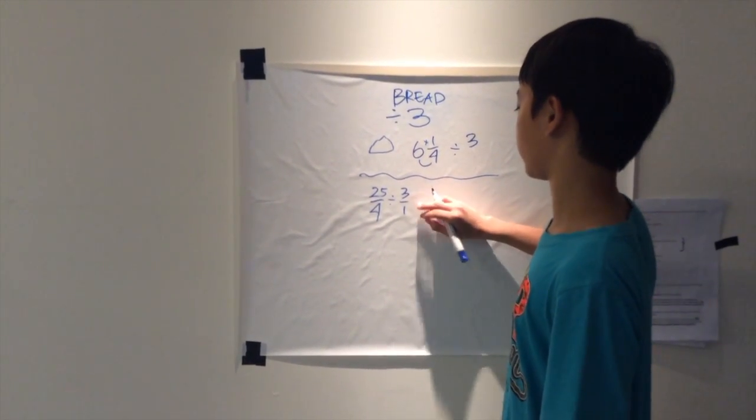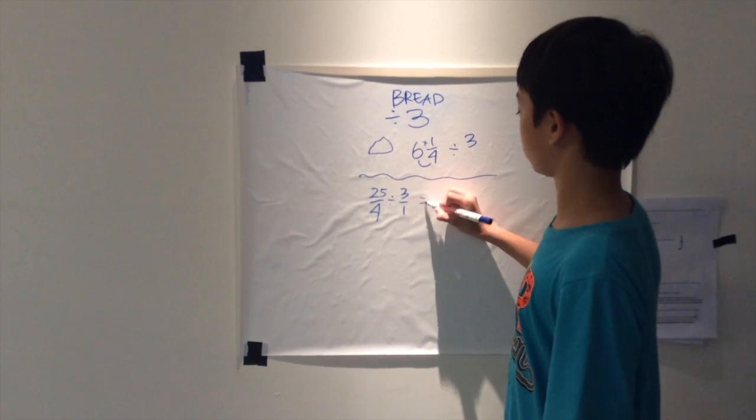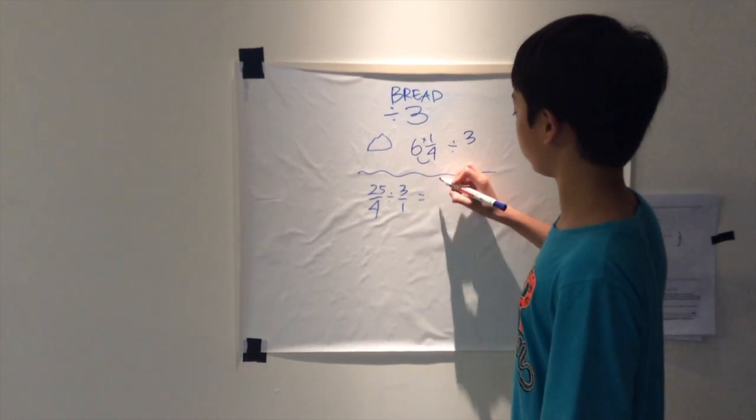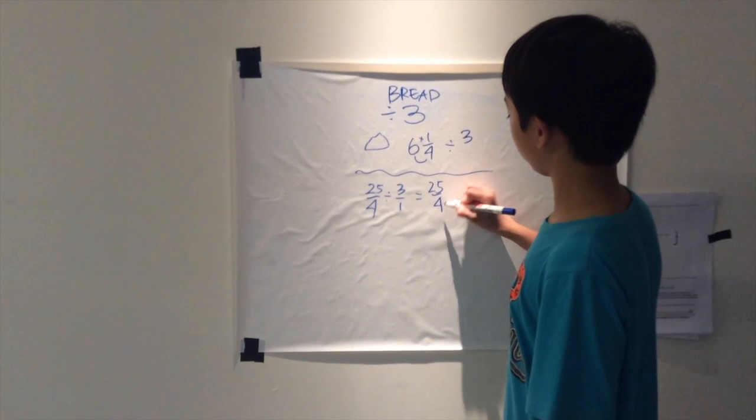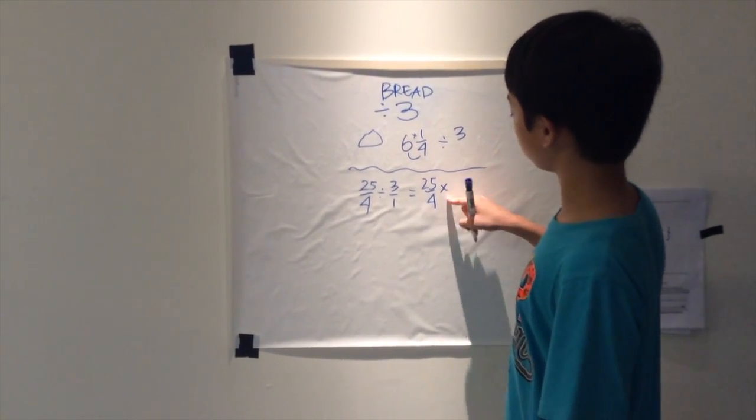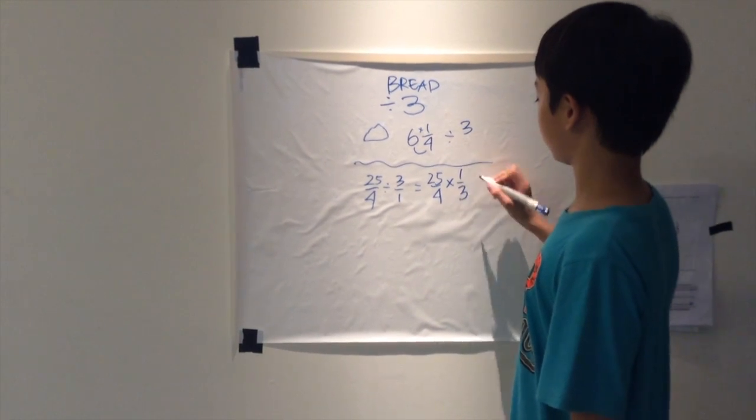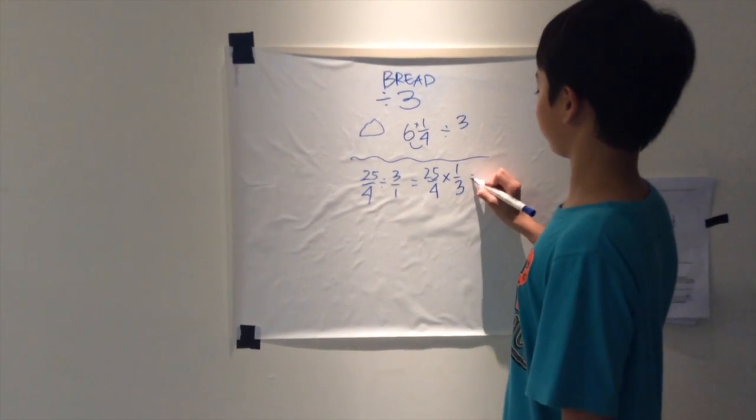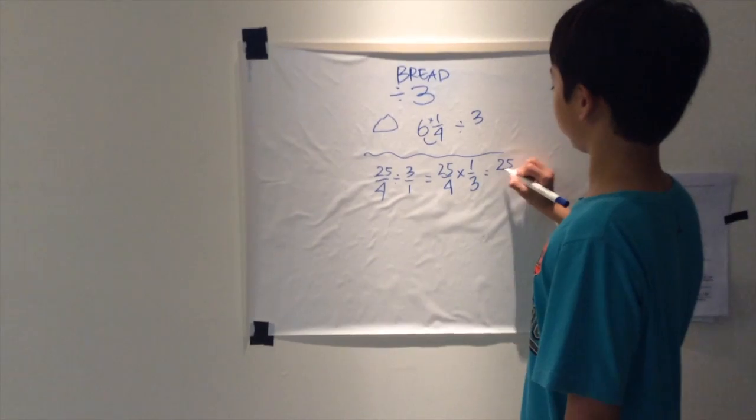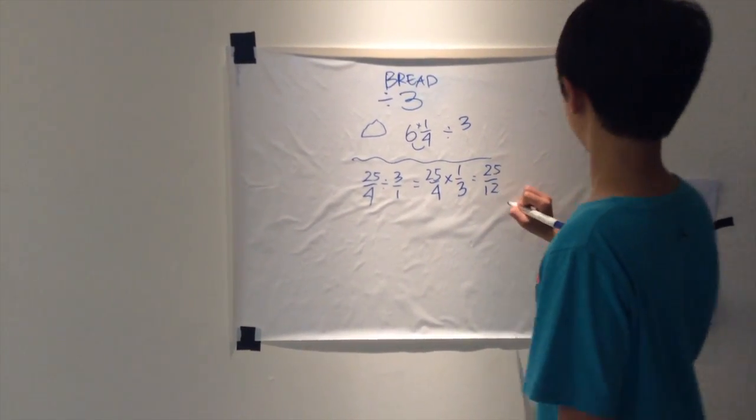And you get... and you also put a multiplication sign. It was that. And so you do it. Twenty-five divided by twelve.